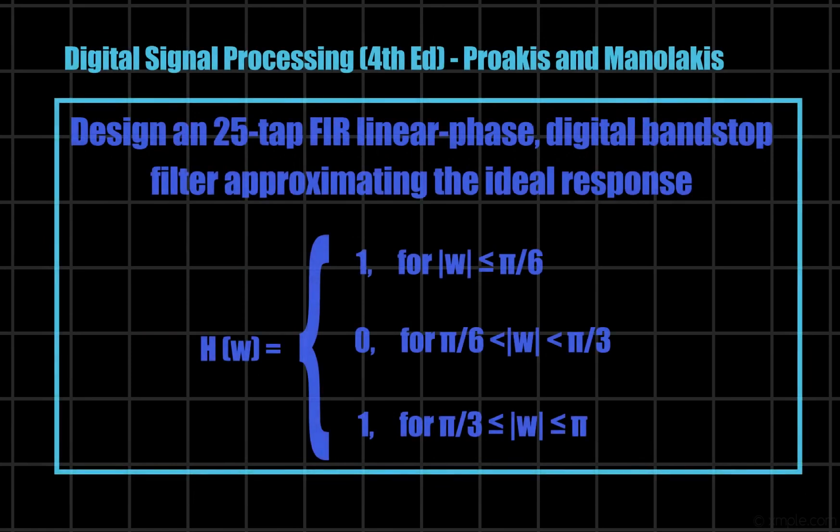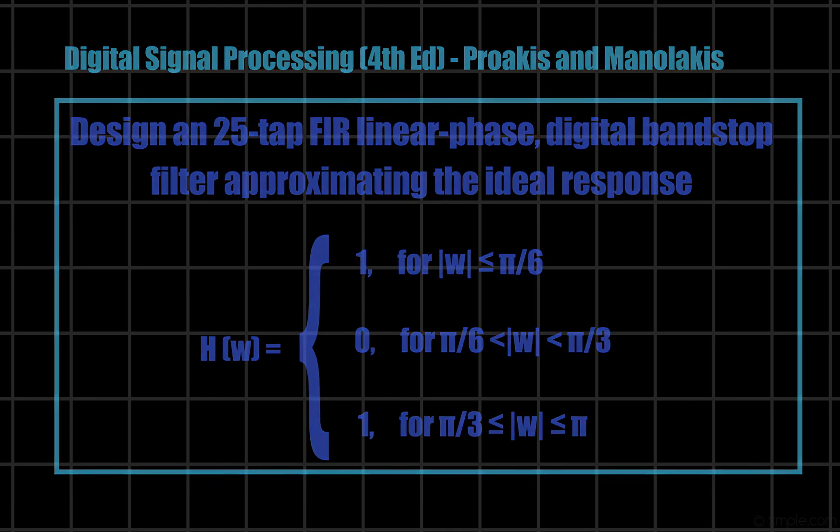Now, let us solve a problem. In this problem, we have to design a 25 tap FIR band stop filter with stop region from pi by 6 to pi by 3. To design this FIR filter, we will make use of a Bartlett window.